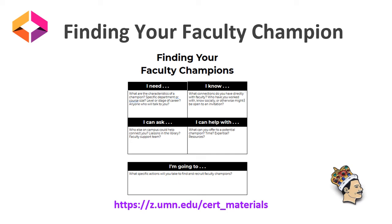To make that more formal, we've developed a worksheet — you can find a link at the bottom of this slide and in the cert materials folder. It's called 'Finding Your Faculty Champion' and asks you to think through four questions and then commit to an action. The first question is: what do you need? What are the characteristics of a champion? Do you need an in to a particular department? On my campus, if we can find somebody in engineering doing OER, that's a big deal. Think about where you are and what an ideal role for a faculty champion might be.